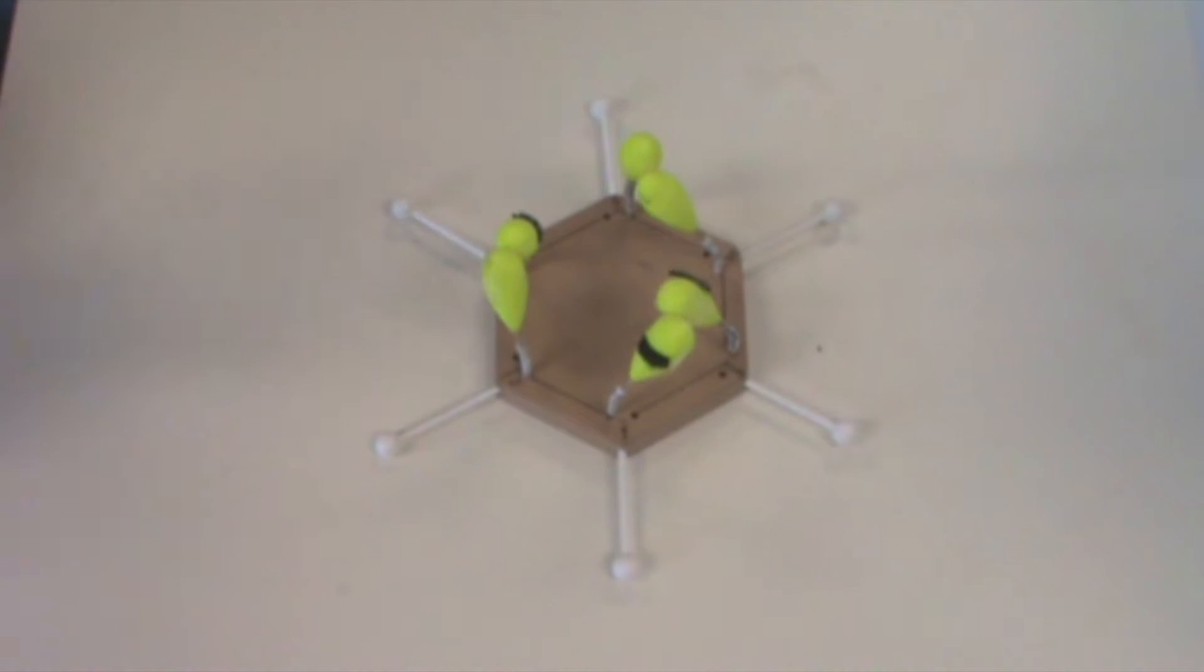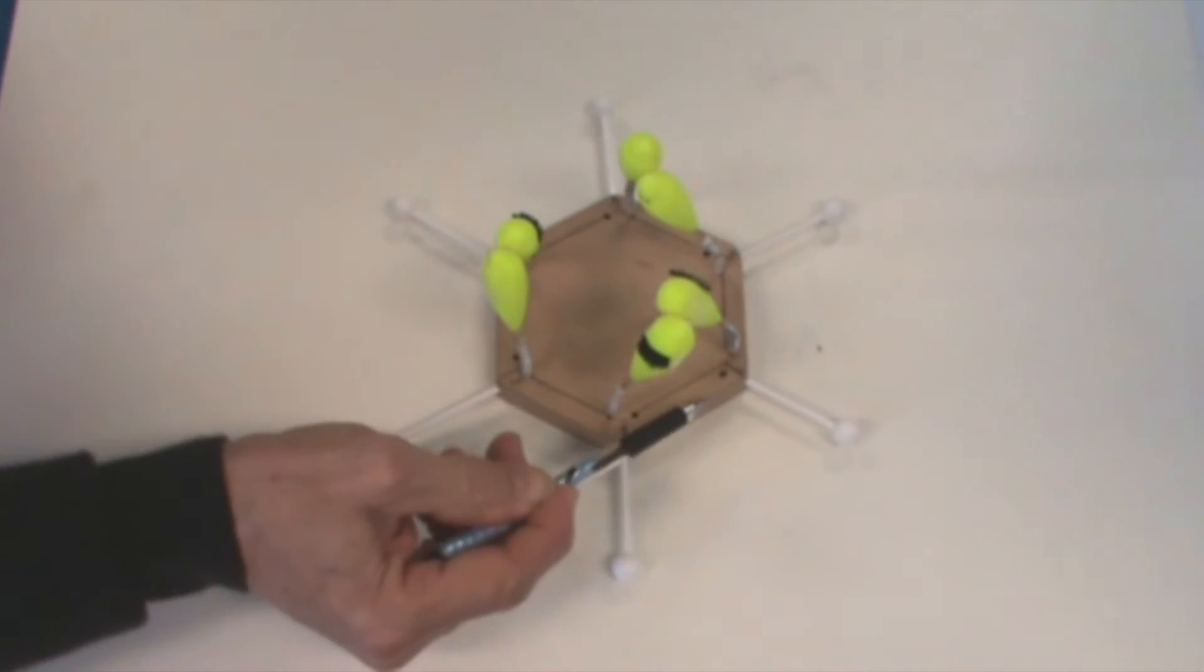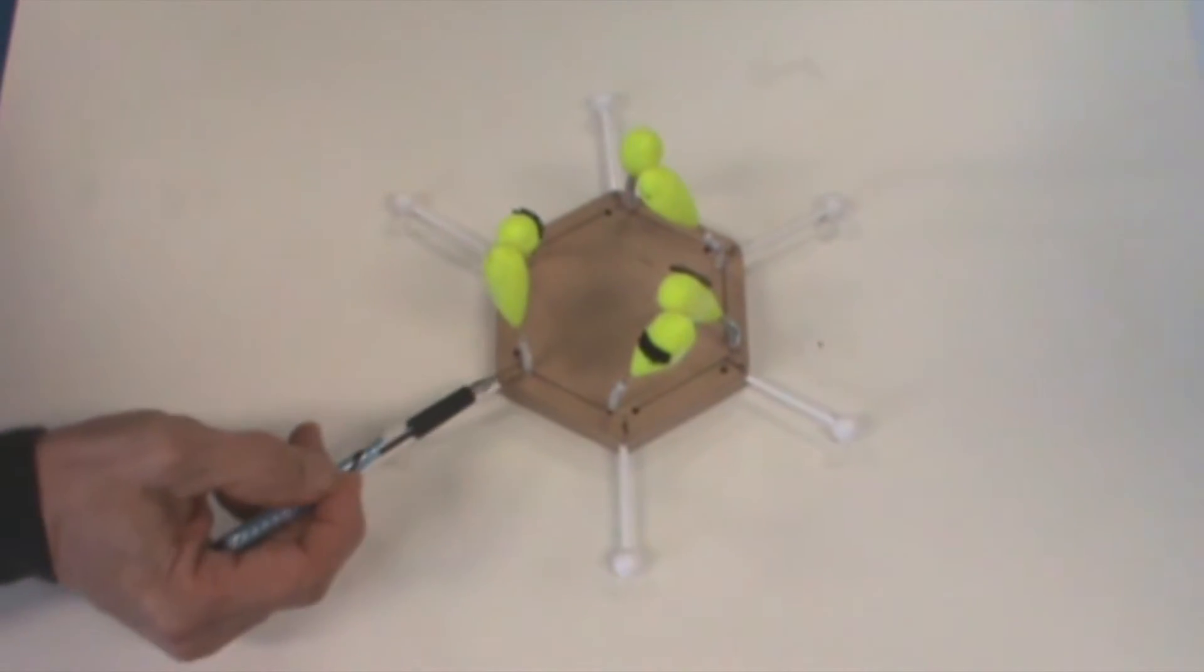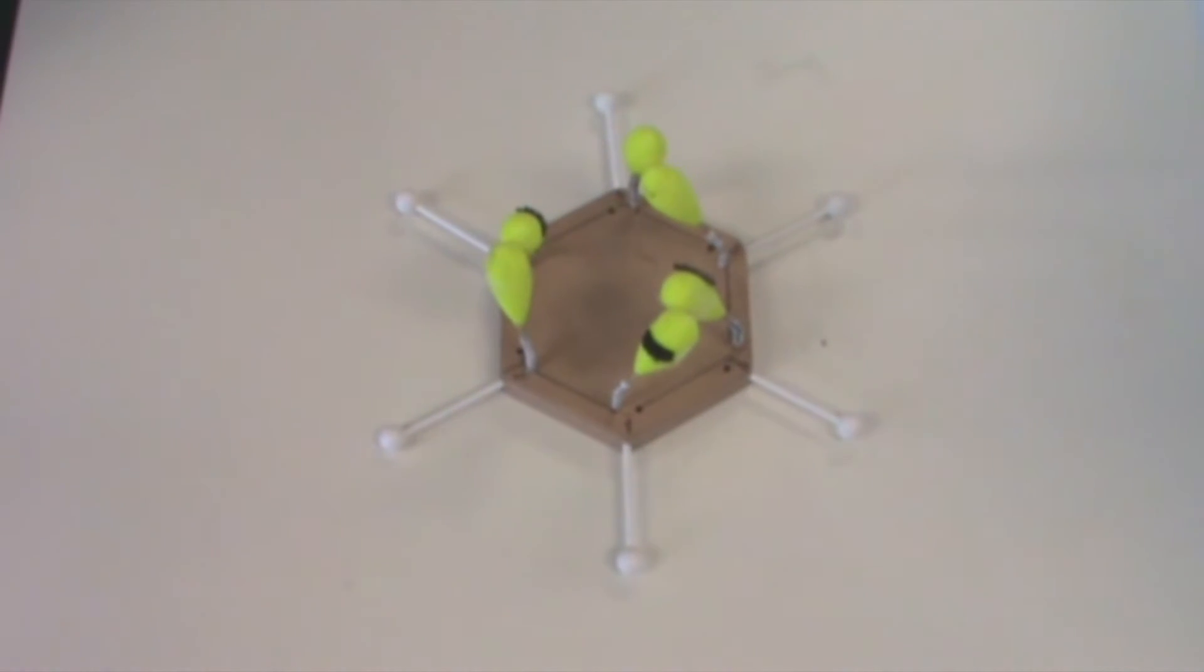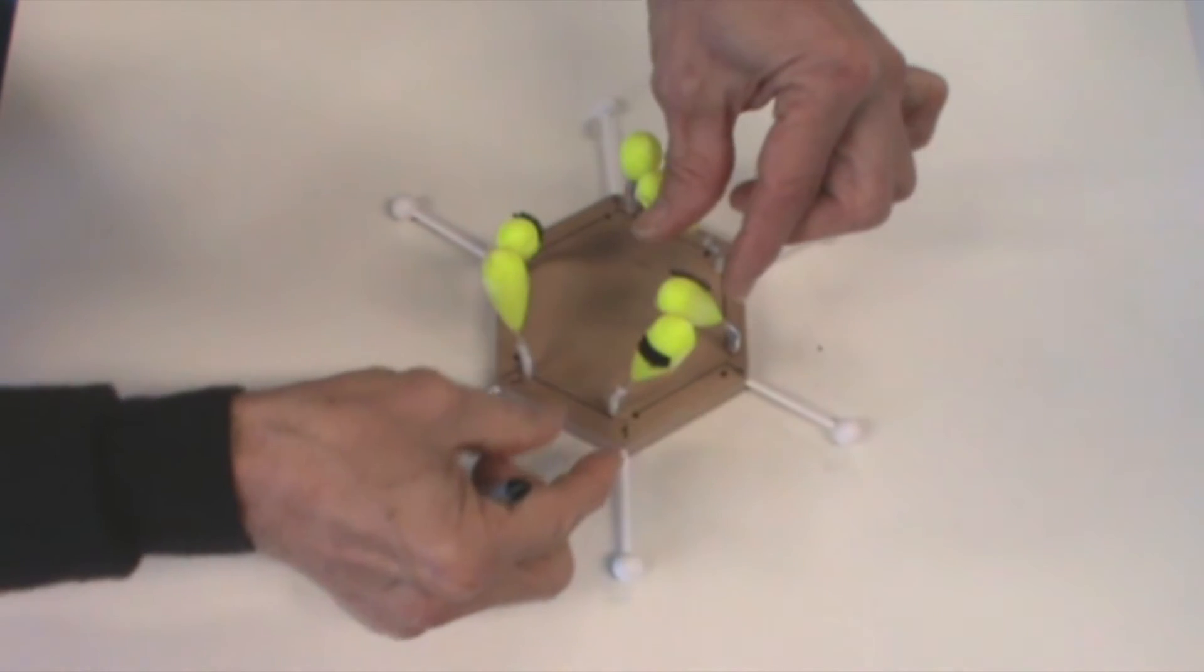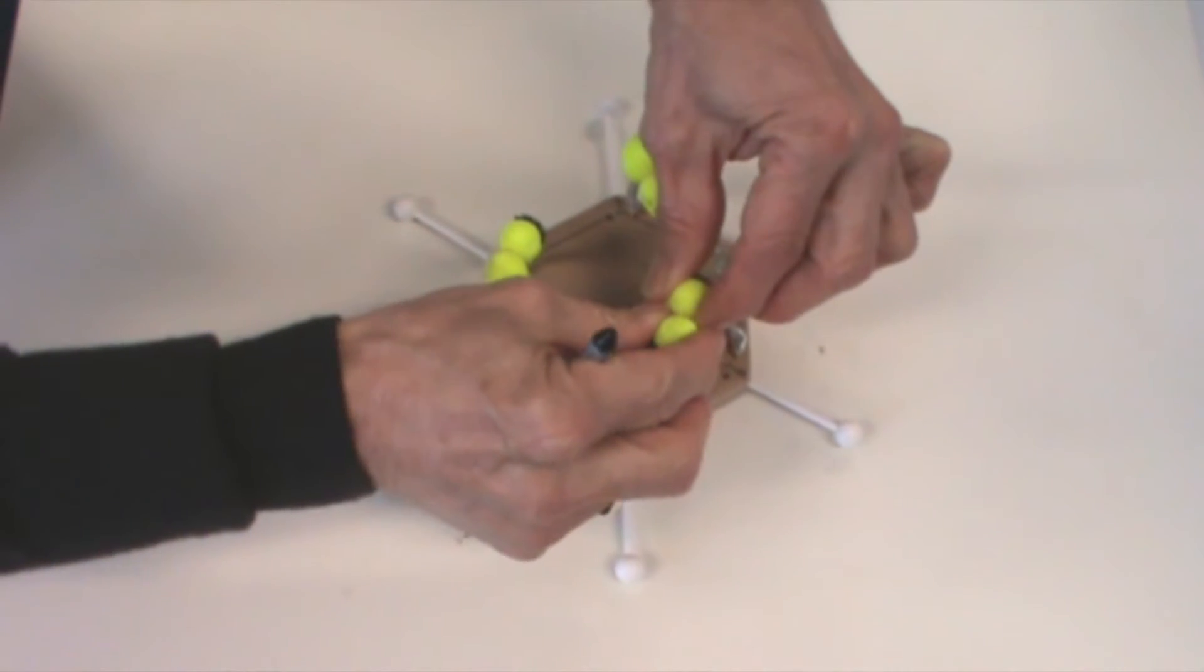At this moment you see a bond between one and six, two and three, and four and five. But now I'm going to disconnect number one and number six like this.